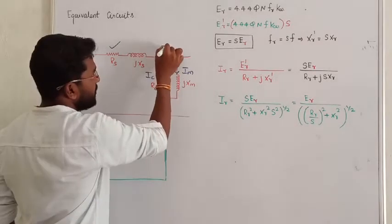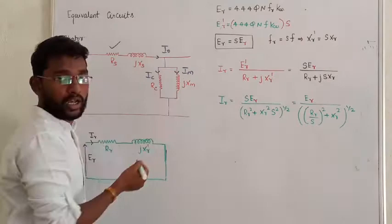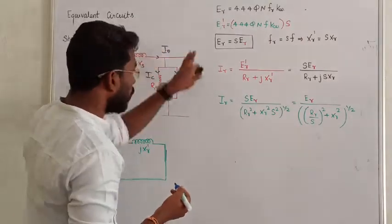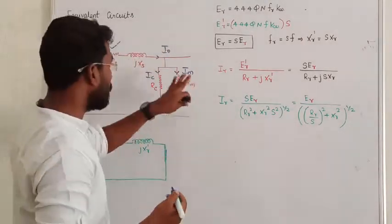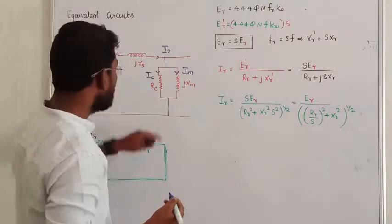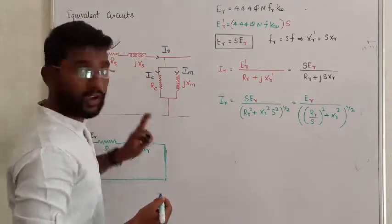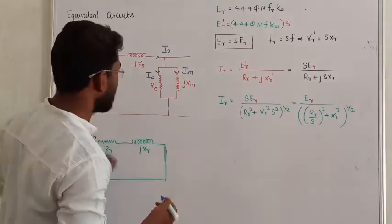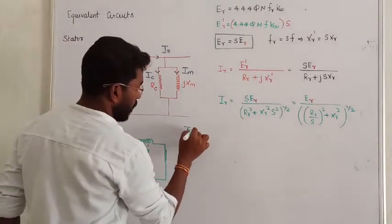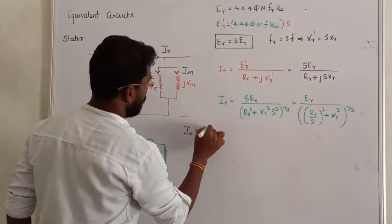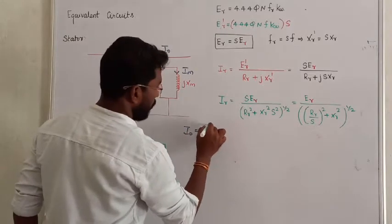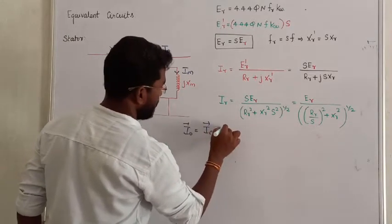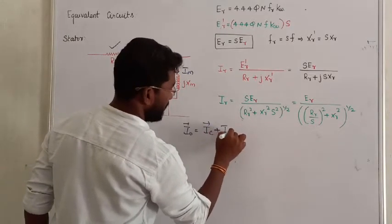This stator current is called no-load current. That is the load equal component — rotor load. If you couple it up, this is the standard equivalent circuit. The no-load current I₀ is equal to the core component plus the magnetizing current.